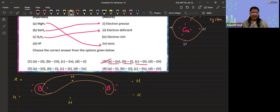Now let's see the last option where HF—we know that it is an electron rich species because the fluorine has three lone pairs around its valence shell. So the correct answer is the second option.